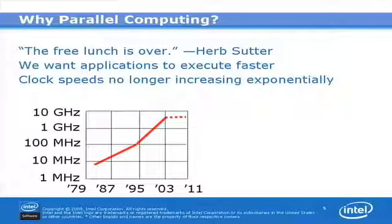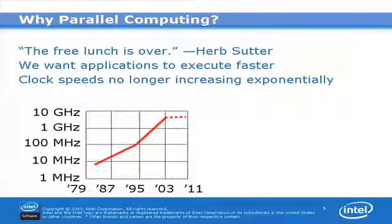So why parallel computing? The famous quote that sums this up comes from Herb Sutter: 'The free lunch is over.' What he meant was that clock speeds are no longer going to be increasing exponentially. As you can see from the graph, clock speeds doubled every 18 months to two years according to Moore's law, but we're not going to be able to sustain that growth any longer — and still we want our applications to run faster and faster.